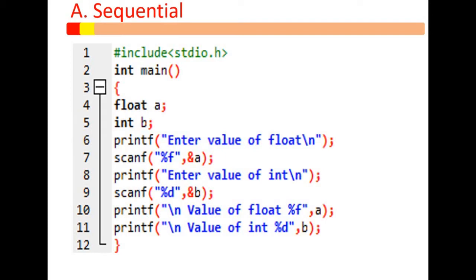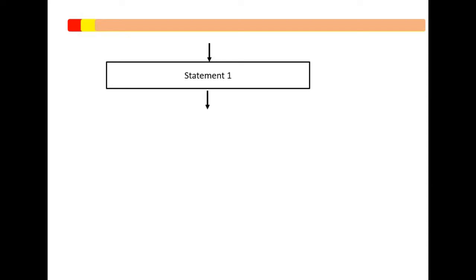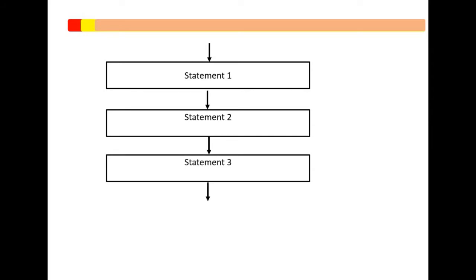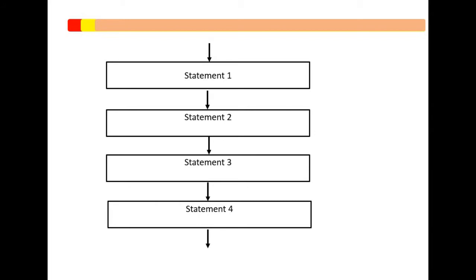The scanf will be executed. Then we move on to the next printf on line number eight where the user again would be asked to enter the value for an integer. Then a scanf will be presented so that the user can enter a value. Lastly the program will output the value carried by 'a' and the value held by 'b'. The execution will be as shown by the following flow: statement one is executed, followed by the second statement, and so on until the last statement is executed.